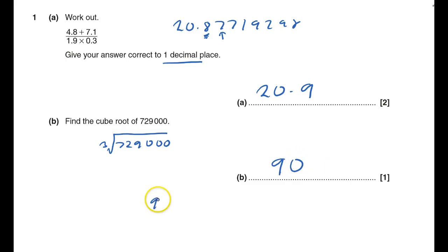You could always check if you want to because 90 times 90 times 90 should give us that. And it does. That's one done.